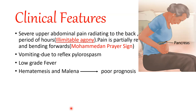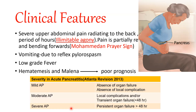The severity of acute pancreatitis can be mild, moderate, or severe. Mild pancreatitis is when there is no organ failure and no local complications. In moderate AP there may be local complications or transient organ failure lasting less than 48 hours. In severe acute pancreatitis there is persistent organ failure lasting over 48 hours. Mortality is 10 to 30% in severe AP and it needs to be managed well.